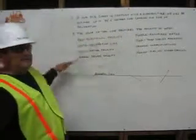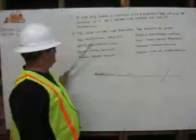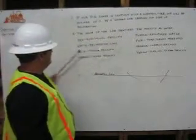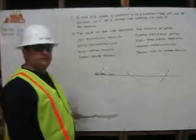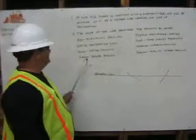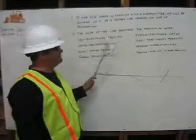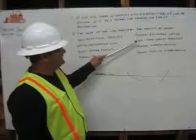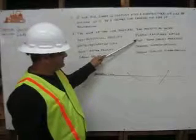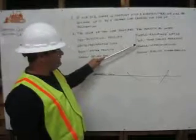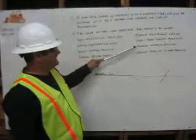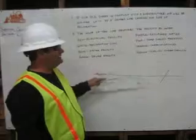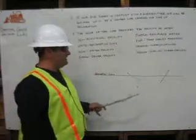We have red for the electrical facility, white is our delineation line, blue is the water facility, green is the sewer facility, purple is reclaimed water, pink is the temporary survey markings, orange is communications, and yellow is gas, oil, and steam facilities.